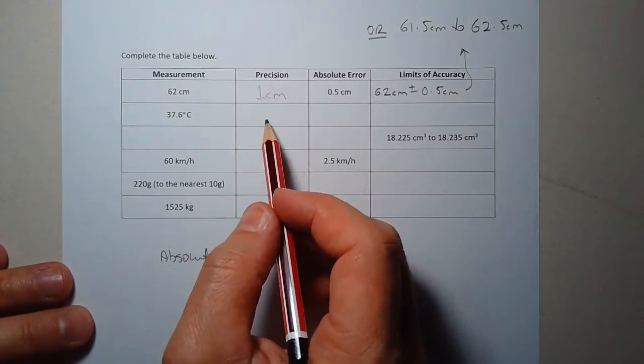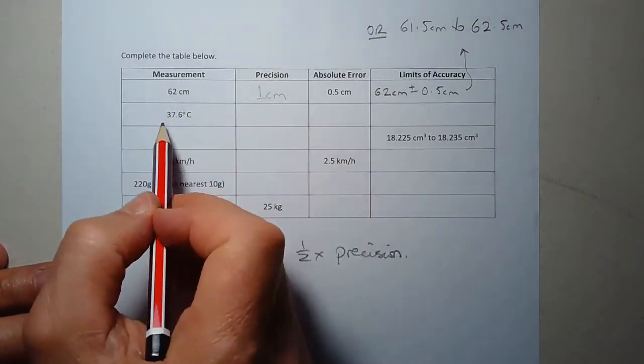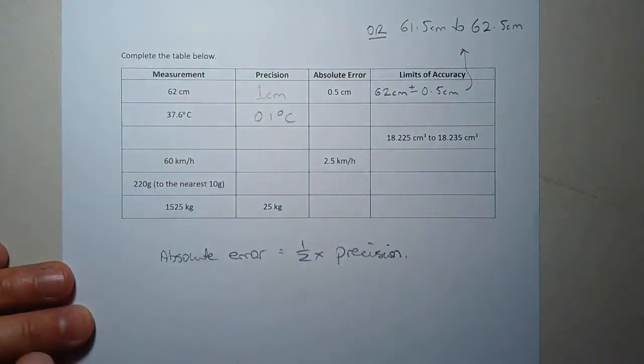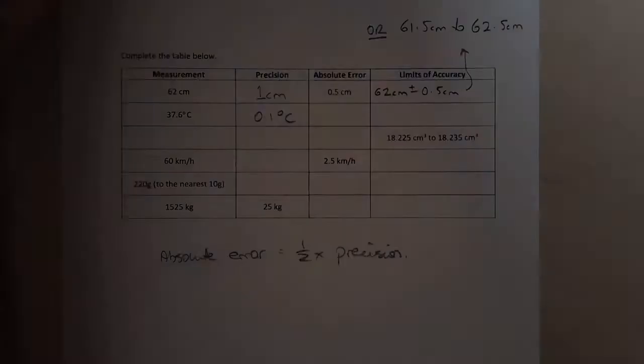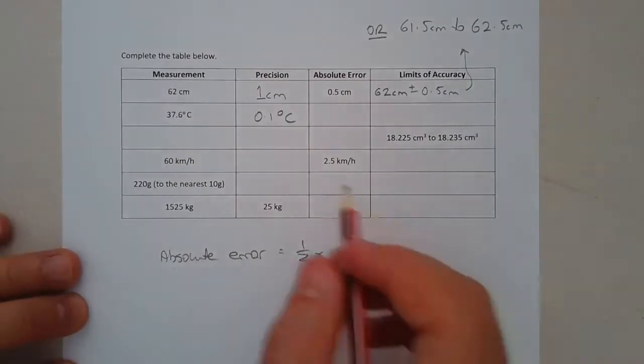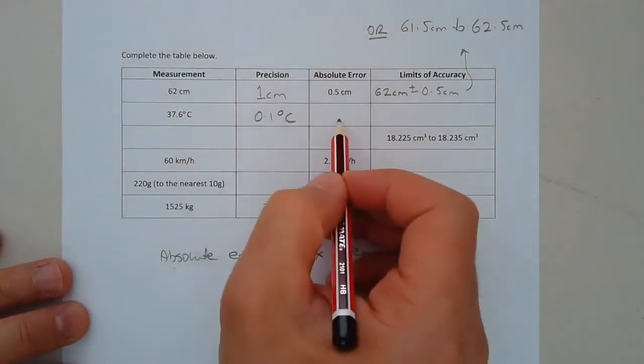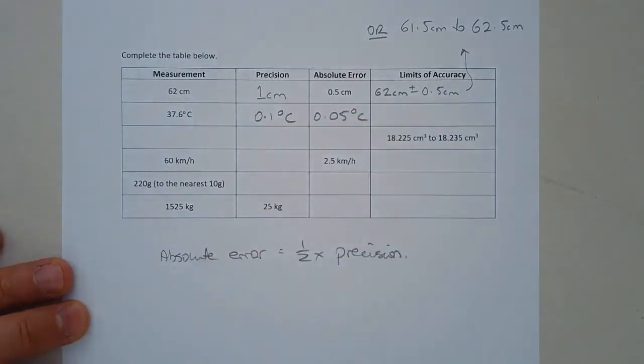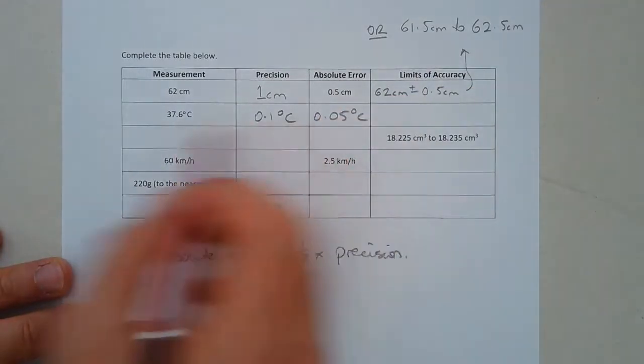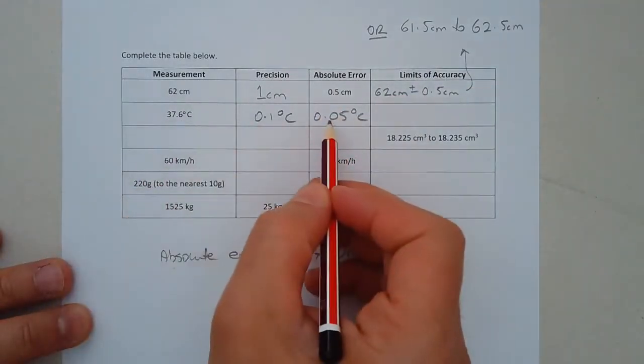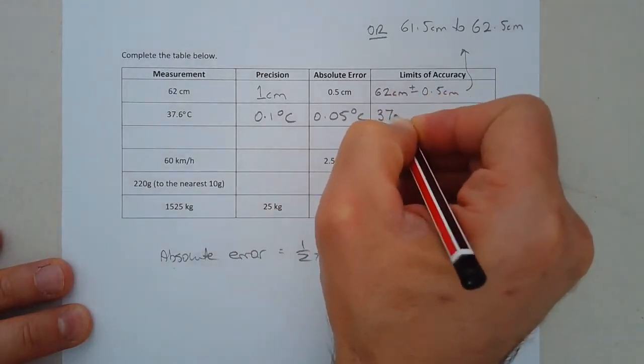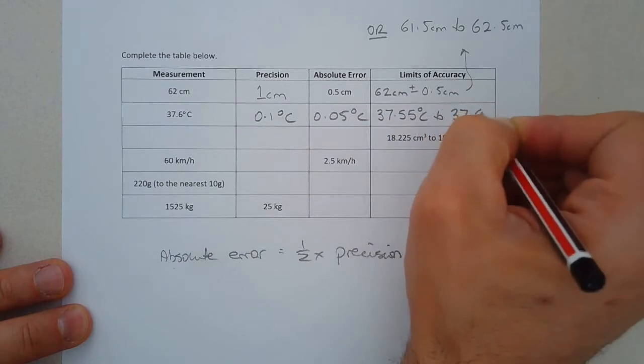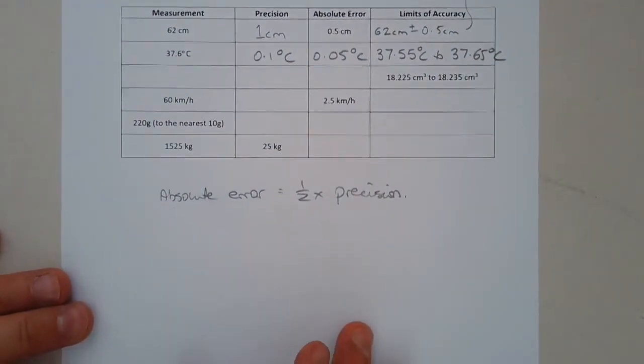So 37.6 degrees Celsius. The precision, we could imply the precision from the measurement. So it looks like the precision is 0.1 degree Celsius. Absolute error is half the precision. So we halve 0.1 and it's going to be 0.05 degrees Celsius. And the limits of accuracy would be basically 37.6 plus or minus 0.05. So that would be either 37.55 degrees Celsius to 37.65 degrees Celsius.